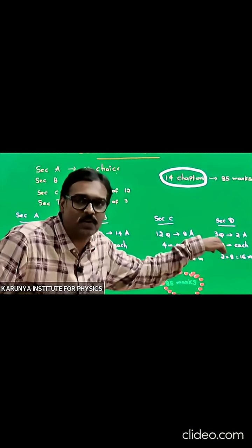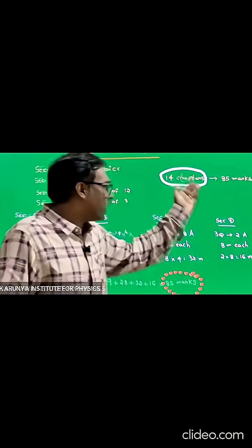For four marks, there are twelve questions. Answer eight of them. Eight into four equals thirty-two marks. Section D begins.